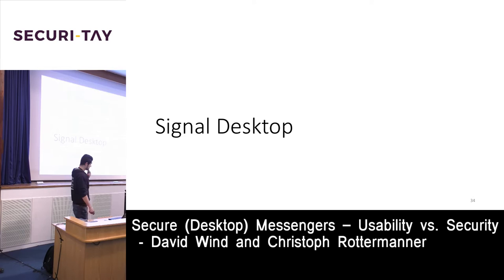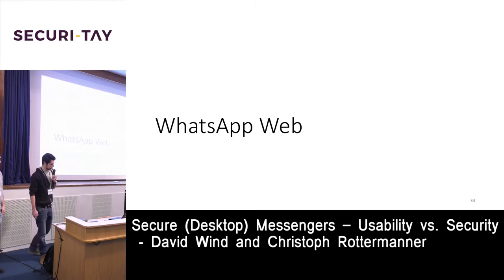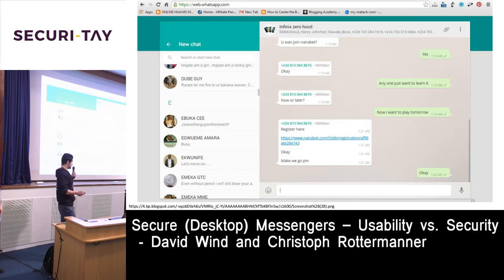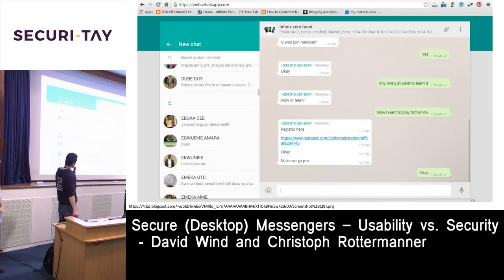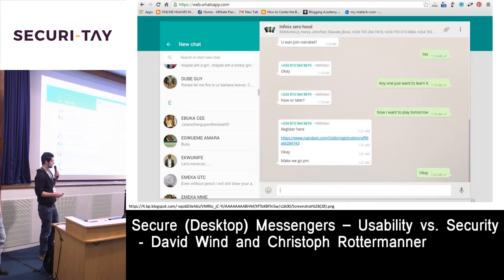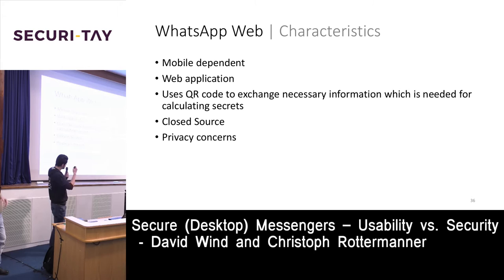That was a short overview of Signal Desktop. Now let's compare it with WhatsApp Web. WhatsApp Web looks like this — it's a web application at web.whatsapp.com. The key characteristic is that it is mobile-dependent: you need a mobile phone with an active internet connection, because WhatsApp Web sends all messages to the mobile, which then relays them to the other party.